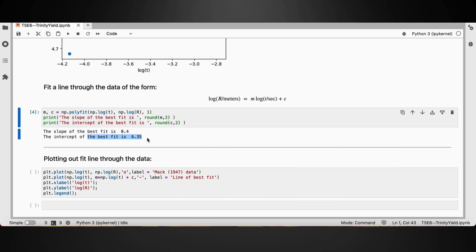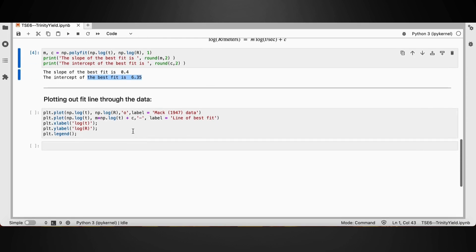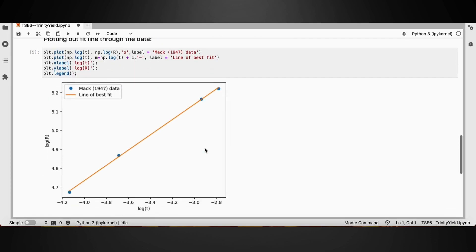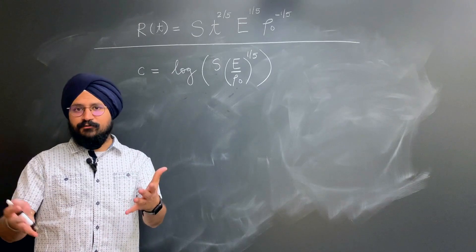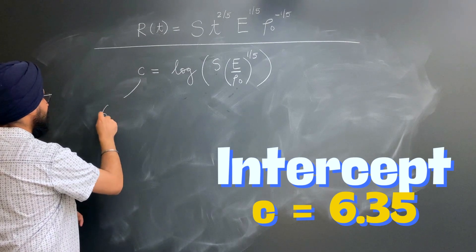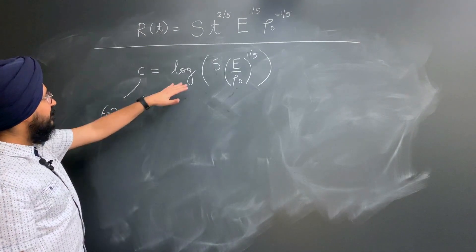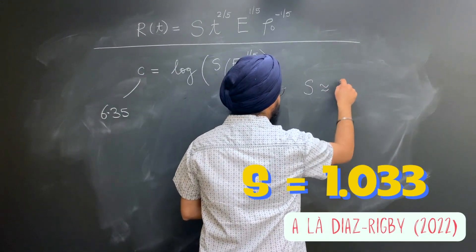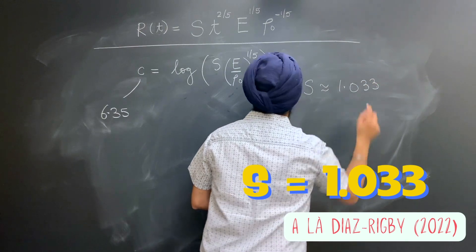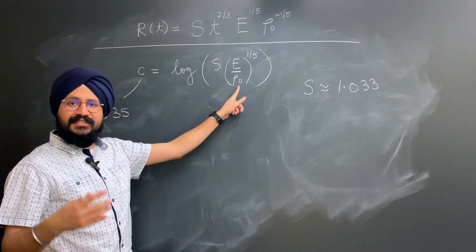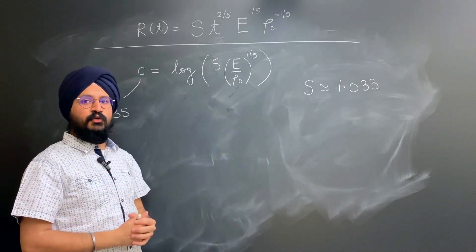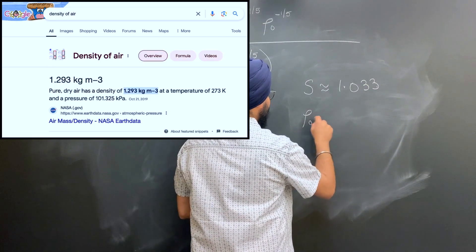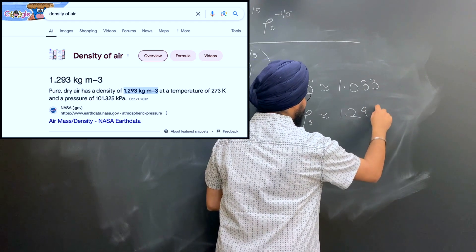Once we plot the data and the best fit together, that's how it looks like. It's a fantastic agreement. And now we can use this to back-calculate and find out the energy of the explosion. We found out our intercept to be about 6.35. And in this expression, we already know that the dimensionless constant s has a value of about 1.033. We would also like to know the density of undisturbed air at standard room temperature and pressure, which comes out to be around 1.29 kg per meter cubed.